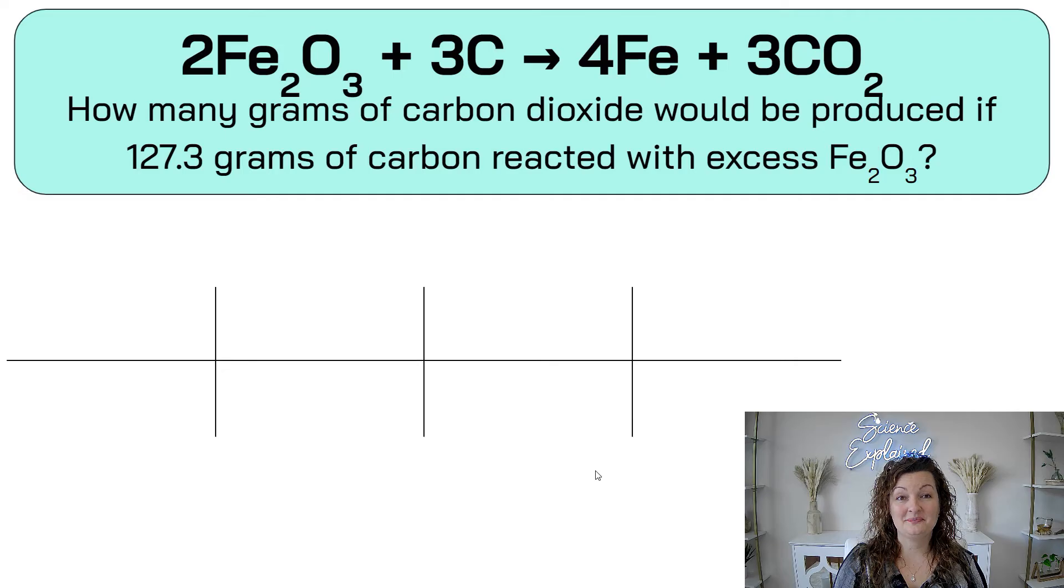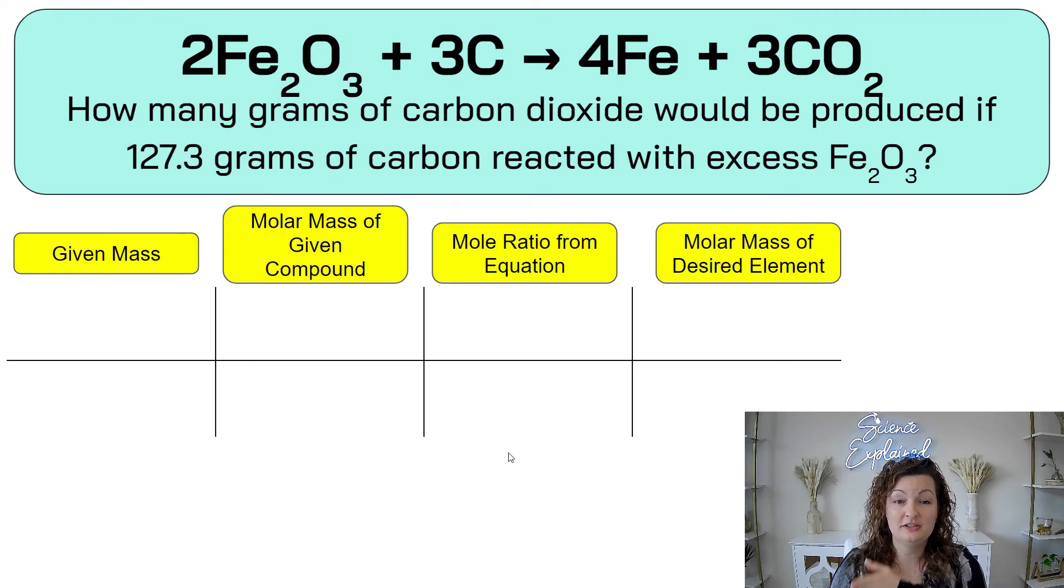Okay, let's try another one. We're using the same balanced equation. So we don't have to worry about balancing it. We're just going to focus on the bridge right now. How many grams of carbon dioxide would be produced if 127.3 grams of carbon reacted with an excess Fe2O3? Let's set it up. What goes in each column. So our given mass, the molar mass of our given, our mole to mole ratio where we can change it, and then our molar ratio of what we want.